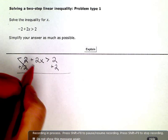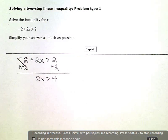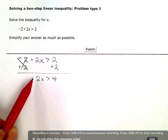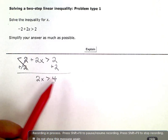When I simplify, I have 2x greater than 4. Now I have one constant term on the left and one variable term on the right. They're on opposite sides of my inequality.